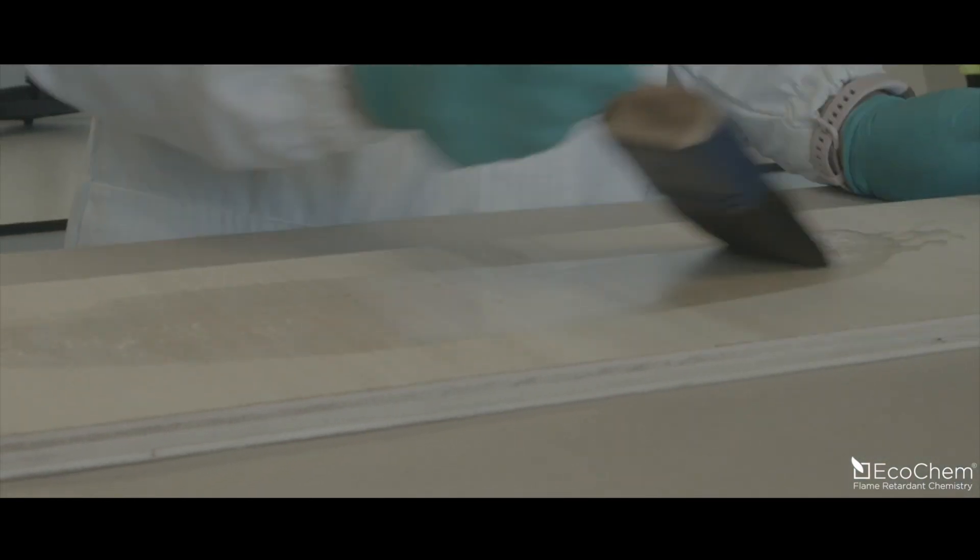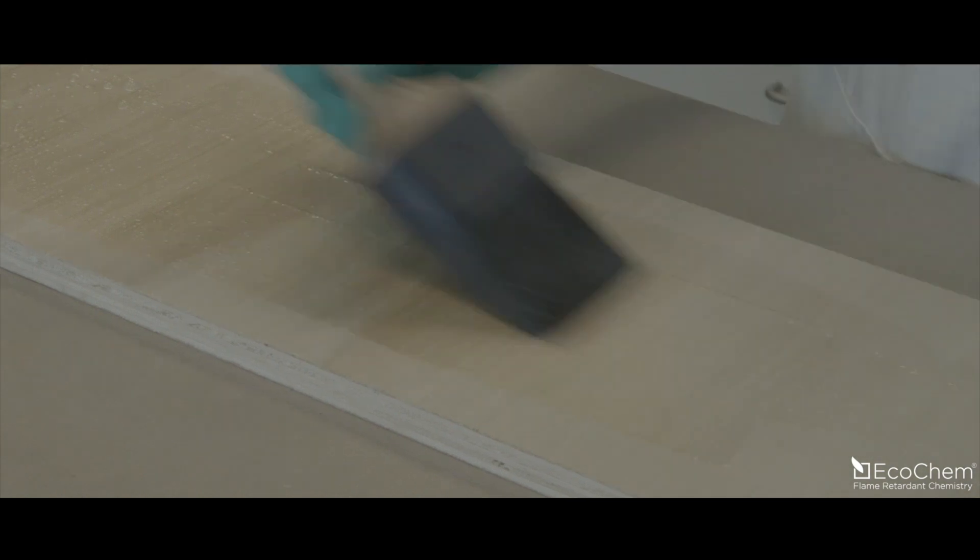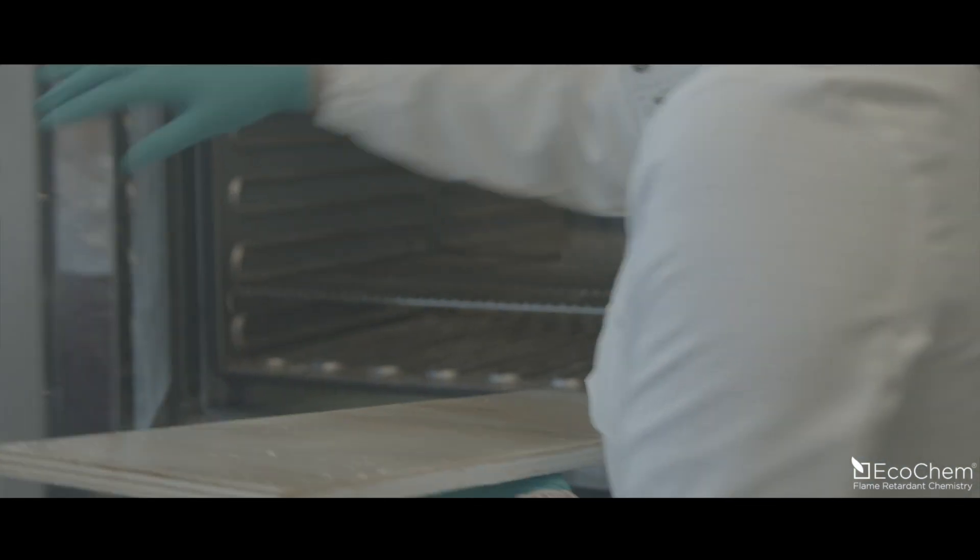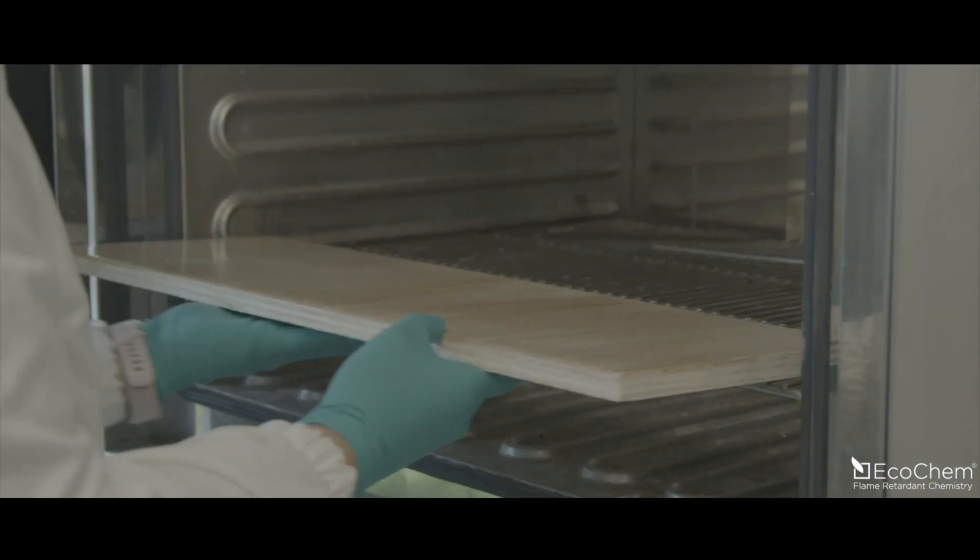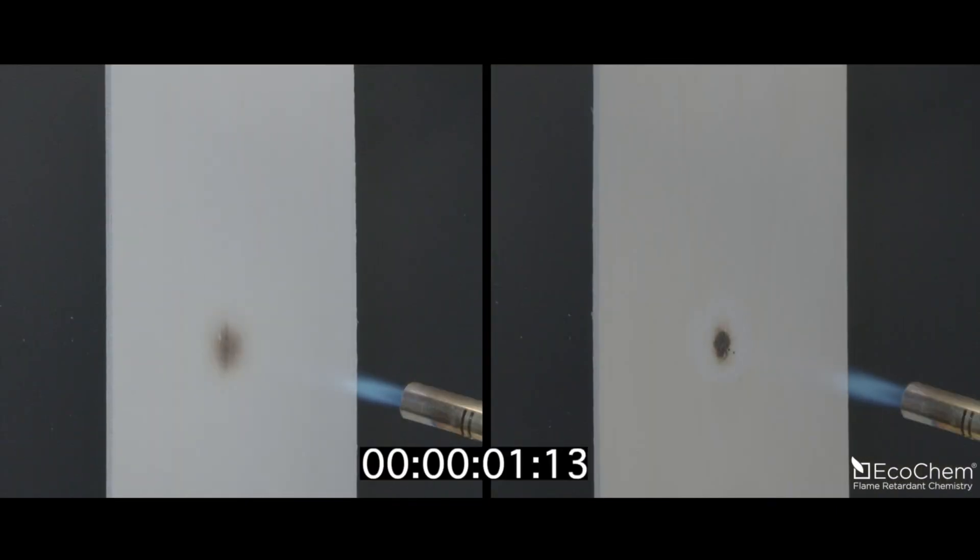For this indicative test, our lab technician applies the Ecochem coating on a standard plywood panel with an exactly measured amount of only 100 dry grams per square meter.